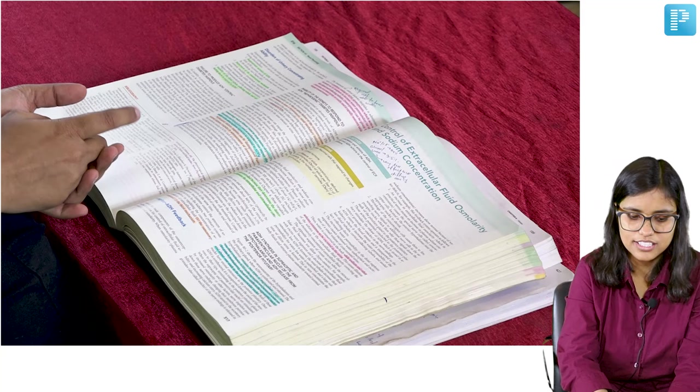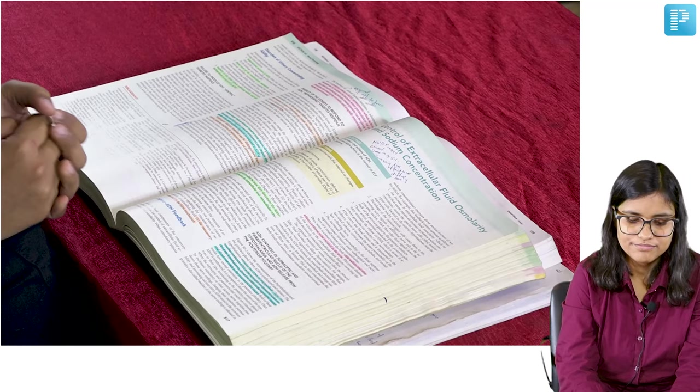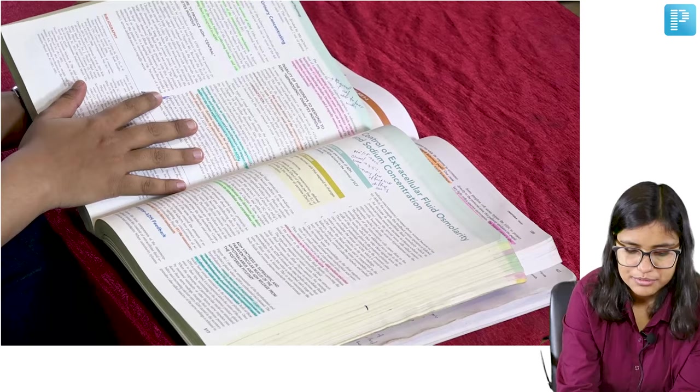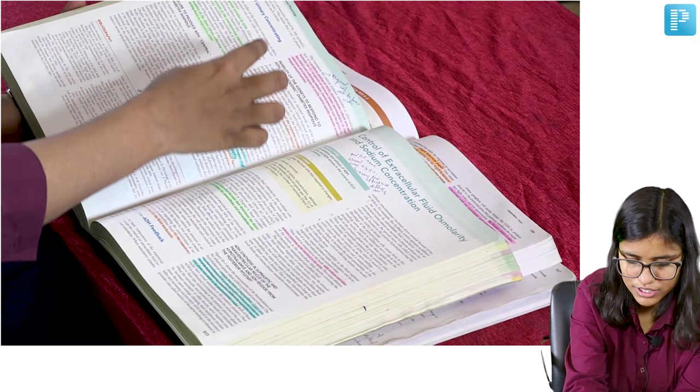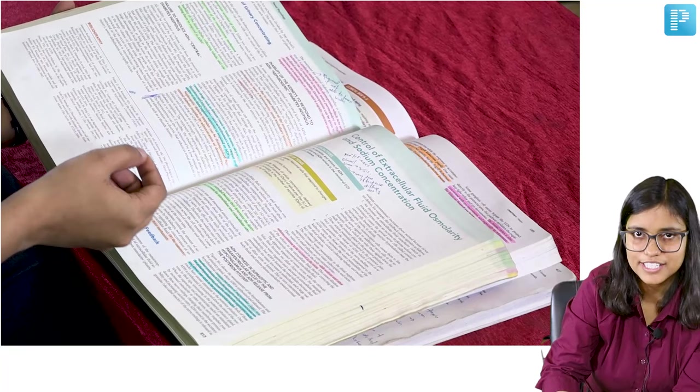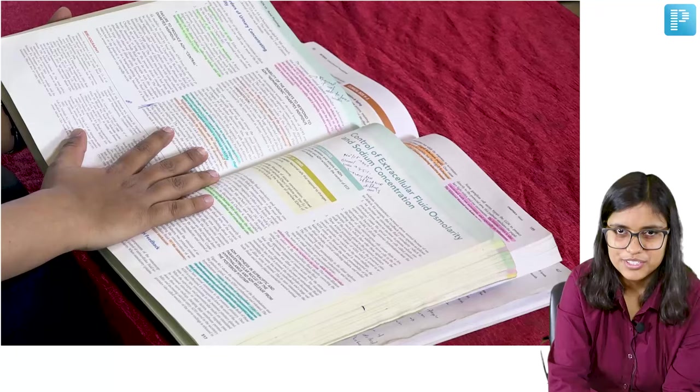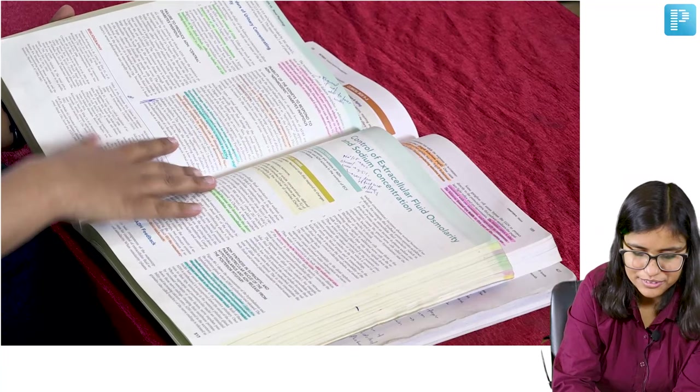When you read any topic, there are important points. I had two books in first year for physiology: one was Guyton, the other was Ganong. This is my Guyton book, the kidney chapter. I studied with different colors for conceptual and factual points. When I opened this book almost a year after second year, I still remembered everything. This is the benefit of highlighting.